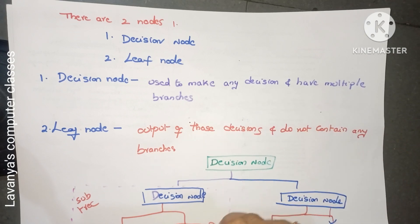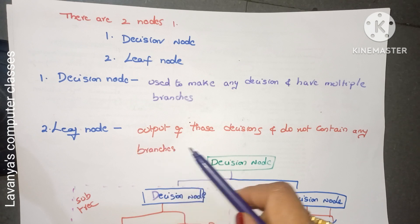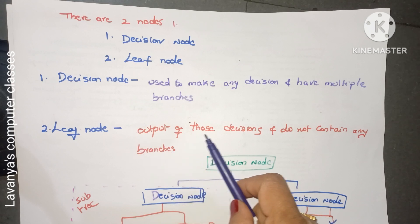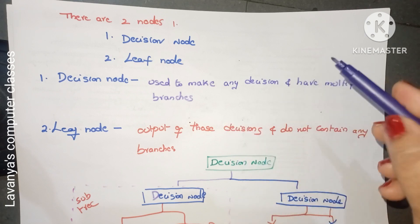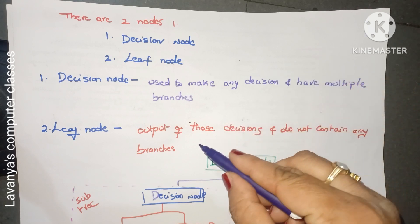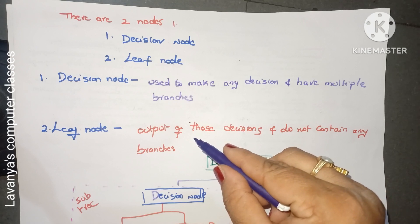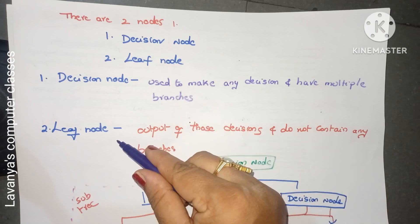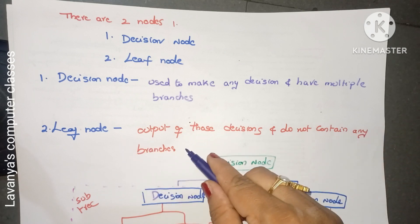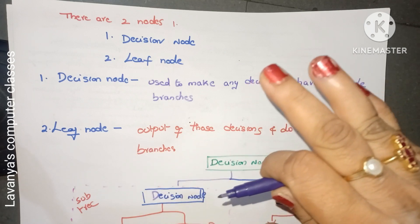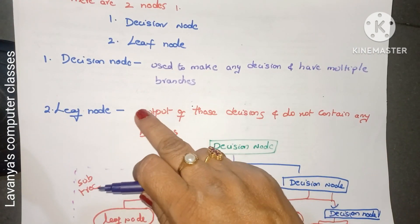I will explain with an example. The second node type is the leaf node. A leaf node is the final output of those decisions. After taking a decision, you select one outcome — that final output is represented as a leaf node and does not contain any further branches. There is no other alternative, so it is called a leaf node.